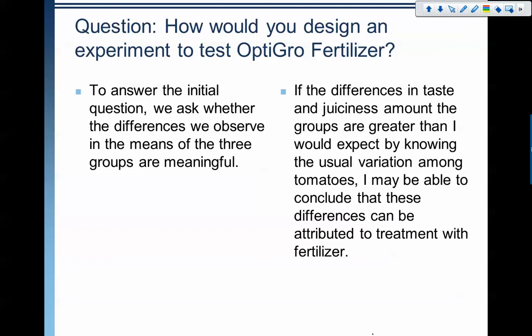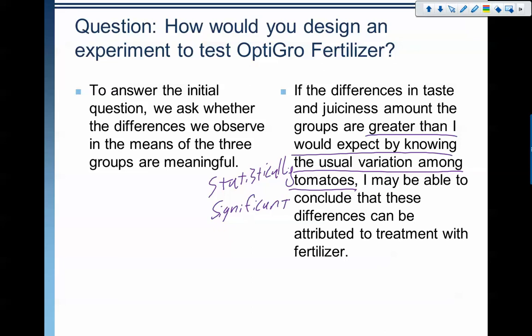To answer my question, I'll look at the differences in the means of the three groups and the differences in the box plots, and determine if there are differences in taste and juiciness greater than I would expect from the usual variation amongst tomatoes. That's important — just because something is slightly bigger, it might just be variation among regular tomatoes. We have to know if the difference is big enough to get outside that realm of randomness, which we call statistically significant. We'll check to see if the results are bigger than what I would expect from randomness.